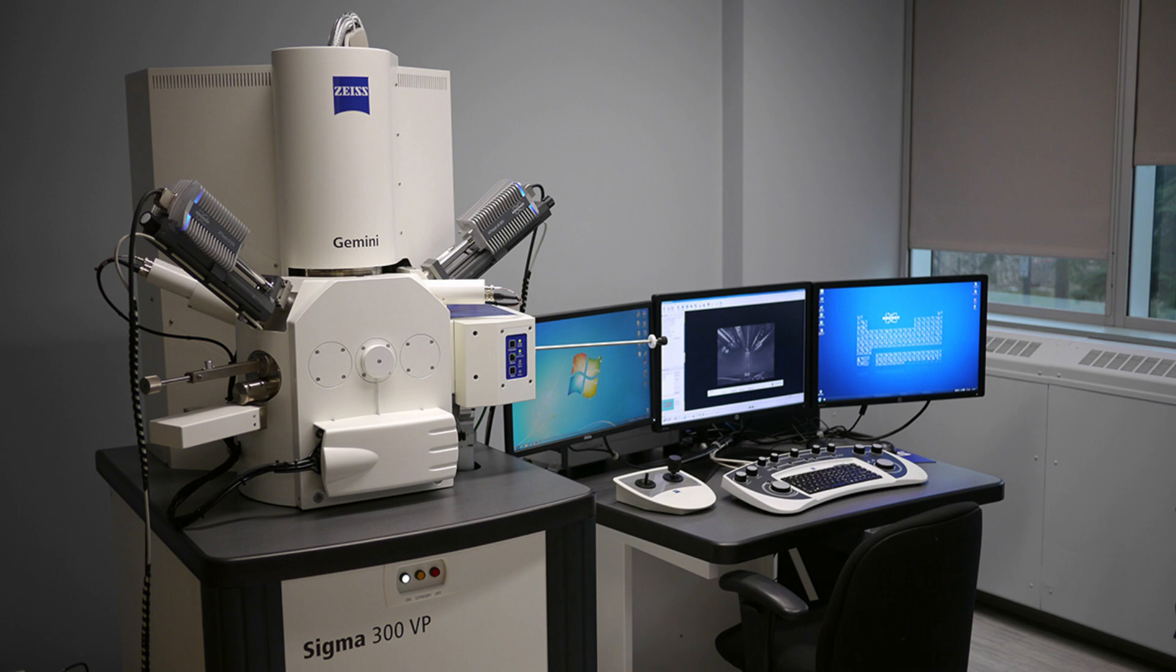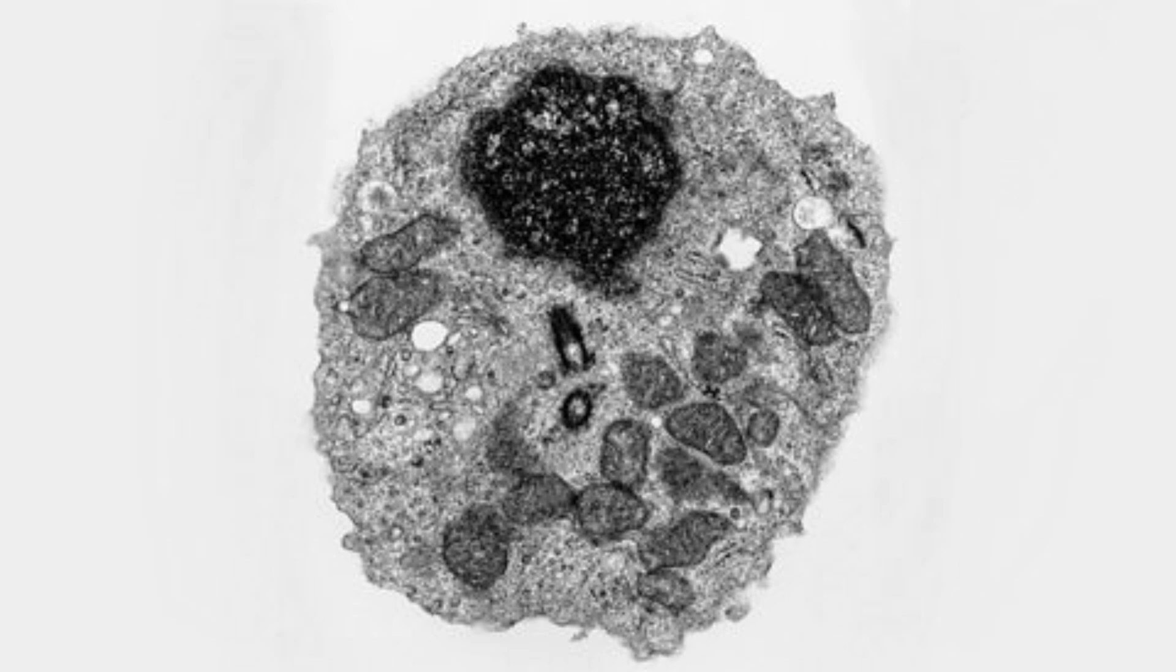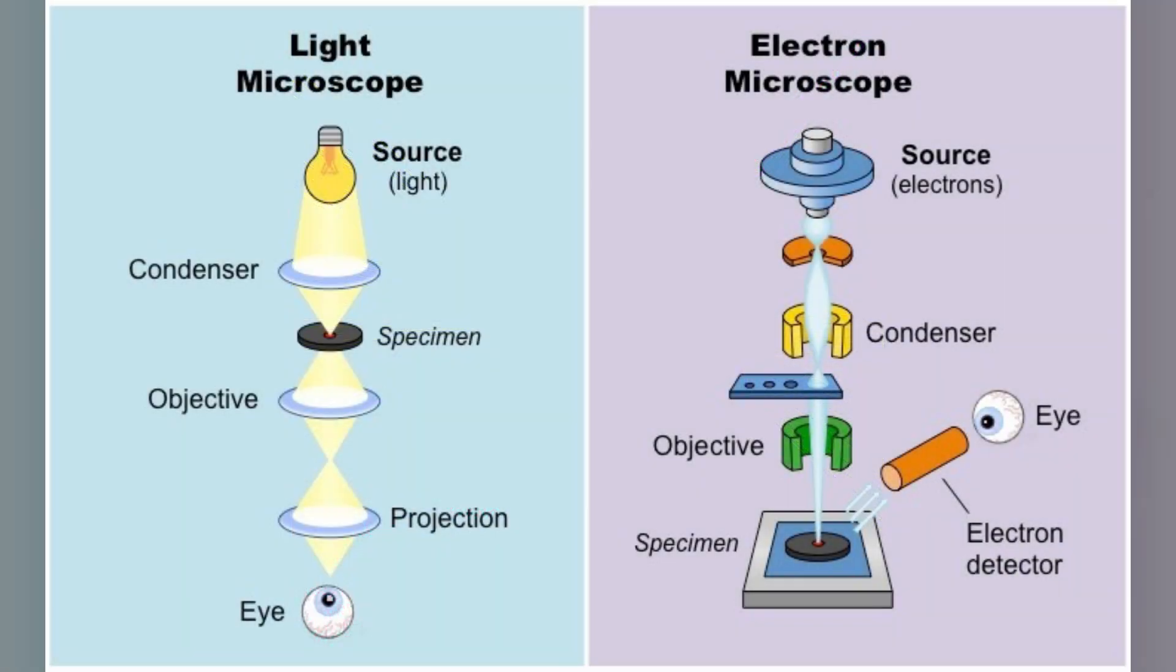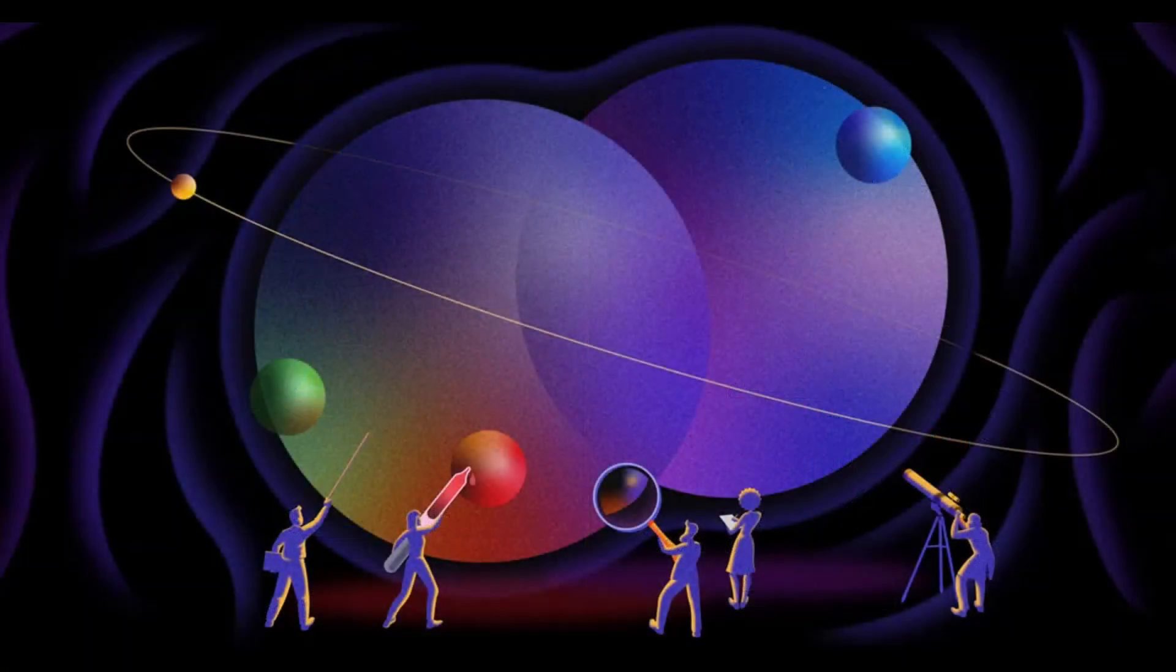Traditional electron microscopes have allowed scientists to observe the smallest structures in the physical world by using beams of electrons instead of electromagnetic waves. These microscopes capture images based on the interactions between the electrons and the sample, but until now, their speed was not sufficient to capture the rapid movements of subatomic particles like electrons.